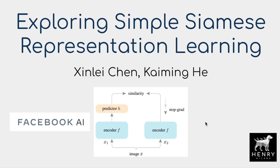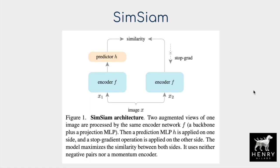This video explains one of the latest experimental papers on contrastive self-supervised learning — exploring simple Siamese representation learning, developed by researchers at Facebook AI. The contrastive architecture explored in this paper is named SimSiam, short for Simple Siamese representation learning. The idea is to take an image X and form two views of it using data augmentation, such as rotating the image, flipping the image, or altering different color channels.